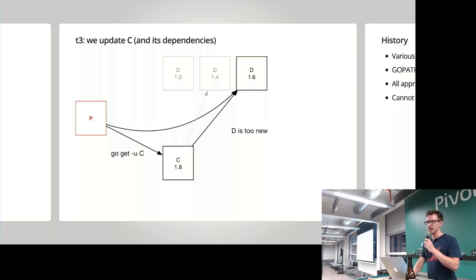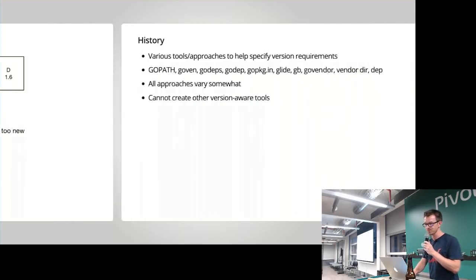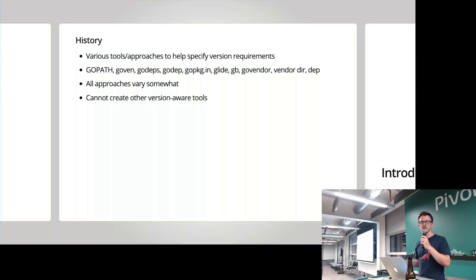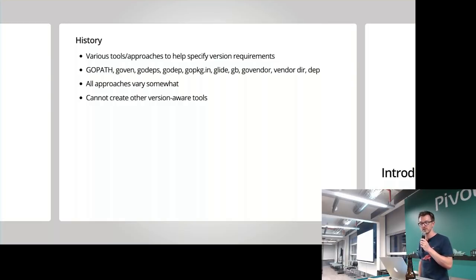Let's do a very brief history run on how the Go tool itself and various third-party programs and tools have tried to solve this problem — that is, specifying version requirements or dependency requirements. You'll see some of the names listed here that you may have used yourself. The one that hopefully everybody is familiar with is GoPath — the original way of essentially specifying which version of a package should be used, whatever code is within the directory structure of your GoPath at that point in time.